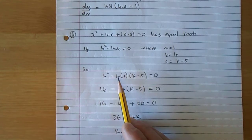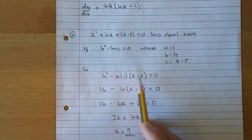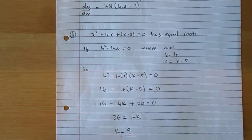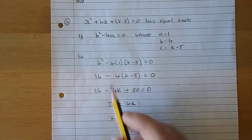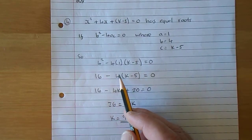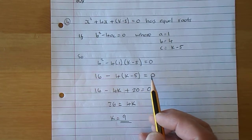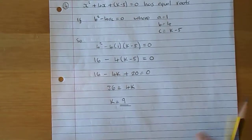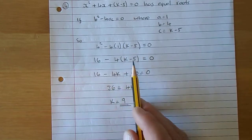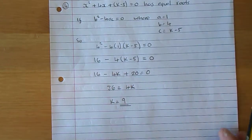b squared minus 4ac: 4 squared minus 4 times 1 times (k - 5) equals 0. 4 squared of course is 16, 4 ones are 4, times (k - 5) equals 0. Multiply through: minus 4k, minus minus plus, 4 fives are 20.